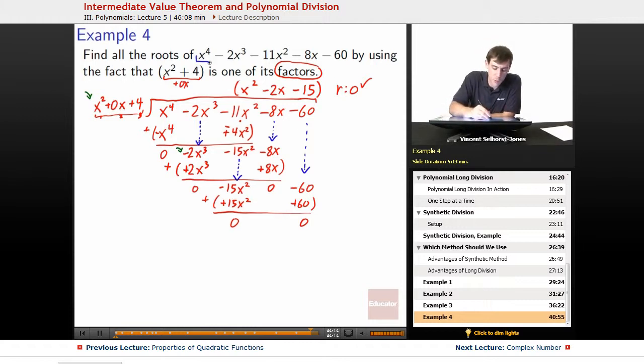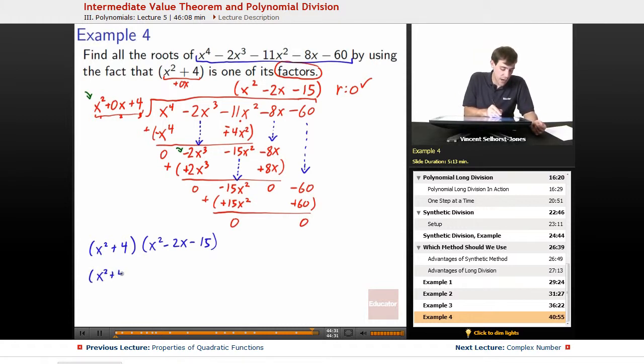So what is our polynomial? It's another way of stating this polynomial. We could also say this as x squared plus 4 times x squared minus 2x minus 15. So let's keep breaking this up. x squared minus 2x minus 15. How can we factor that? x squared plus 4. Can we factor that anymore?